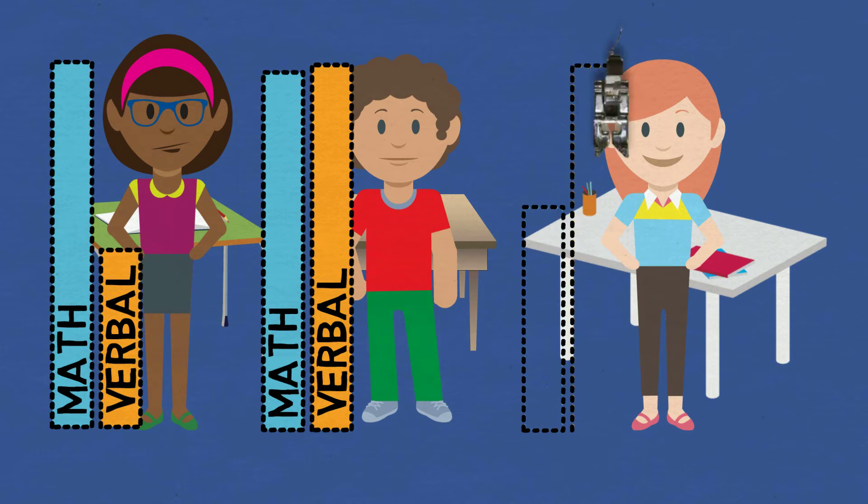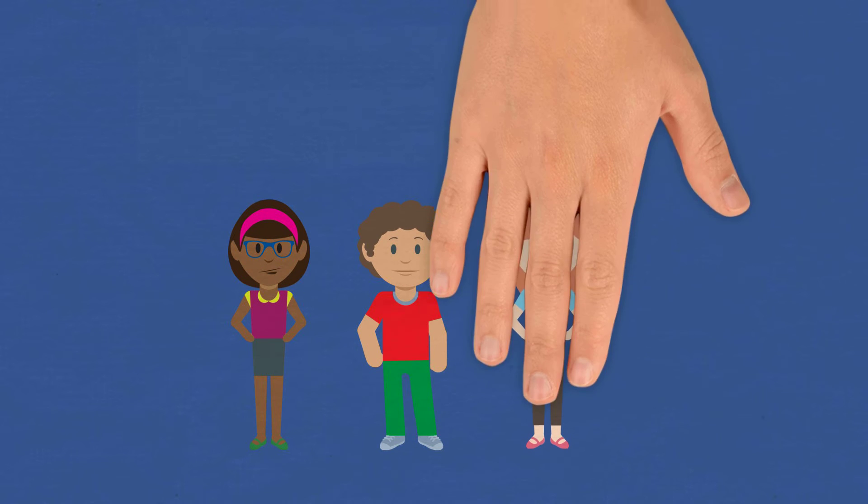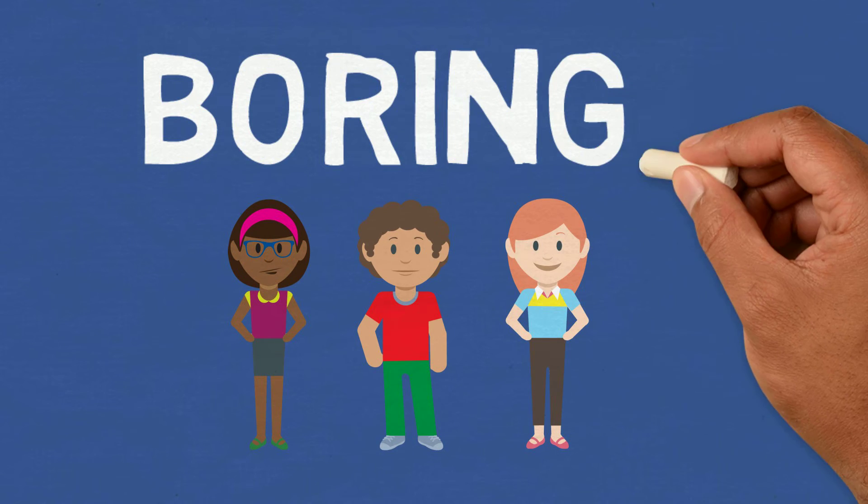She always scores very well on the verbal portion of her grade level tests. In fact, Tabitha, Isaac, and Paige find much of their grade level tests too easy. The tests don't measure the extent of their abilities.